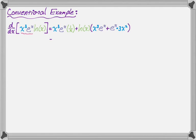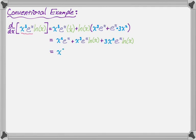This actually factors kind of nicely. Let me first expand. The x cubed and the one over x cancel — that's why it leads with an x squared. Everything else is just straight distributive property. Then I can take out an x squared and an e to the x from everything. So x squared times e to the x, and then what I'm left with is 1 plus x times natural log of x plus 3 times natural log of x. That's how I would find the derivative of three functions in a product.